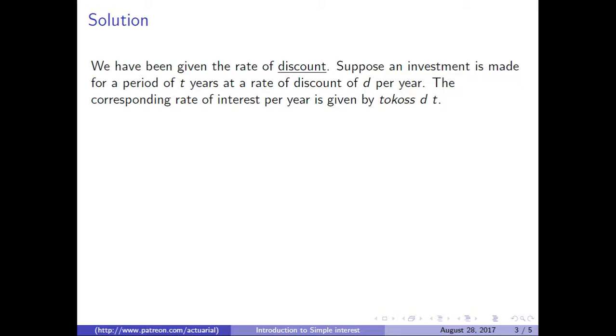Suppose an investment is made for a period of T years at a rate of discount of D per year. The corresponding rate of interest per year is given by tokos of D of T. By definition, tokos of D of T is equal to D over 1 minus D times T.